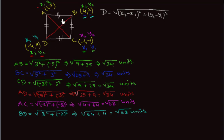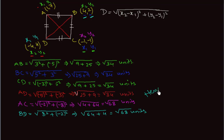All four sides are equal at the square root of 34 units each, and both diagonals AC and BD are equal at the square root of 68 units. Since all sides and diagonals are equal, we can say that these vertices form a square. Hence proved.